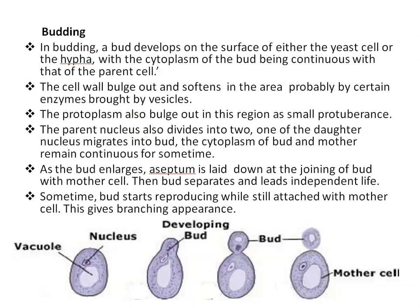Sometimes a bud starts reproducing while still attached to the mother cell, and this gives a branching appearance. The bud gives rise to another bud, that bud again reproduces, and in this way a chain of daughter cells is formed. This gives a branching appearance and sometimes a hypha-like appearance. This type of hypha is called pseudo-hypha. Pseudo means false.